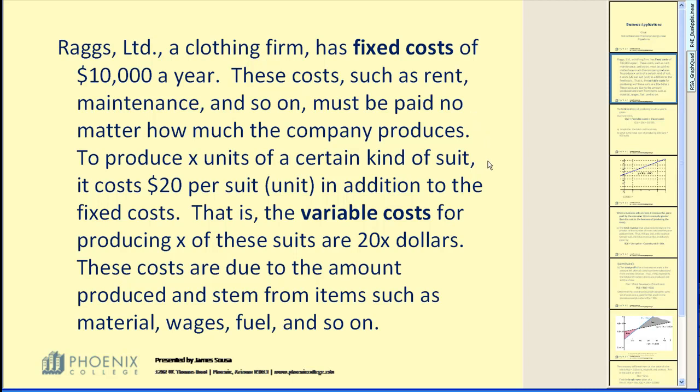To produce X units of a certain kind of suit, it costs $20 per suit or unit in addition to the fixed cost. That is, the variable cost of producing X of these suits is $20X. These costs are due to the amount produced and stem from items such as material, wages, fuel, and so on.